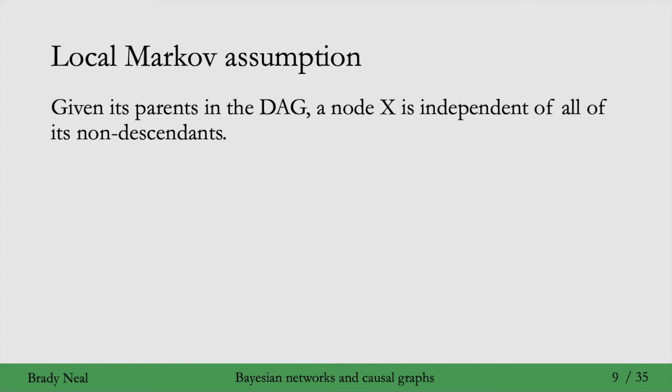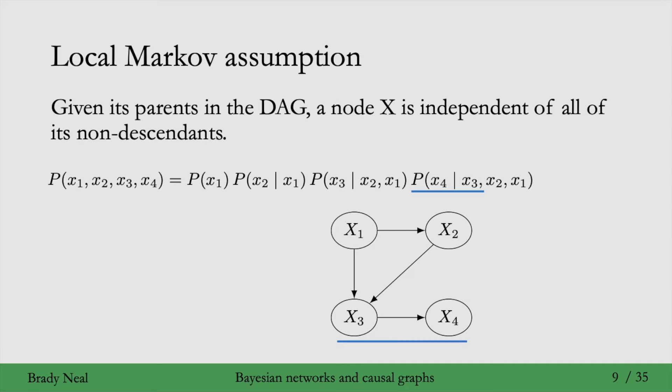We'll see how this helps us out shortly. But first, let's discuss the local Markov assumption, which is, given its parents in the directed acyclic graph, a node is independent of all of its non-descendants.